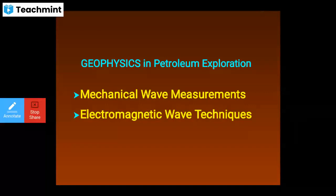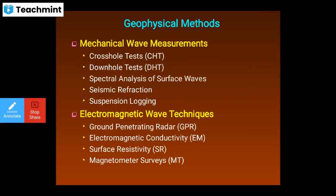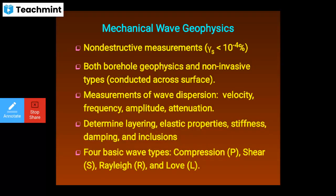The geophysical methods include mechanical wave measurements: crosshole tests (CHTs), downhole tests (DHTs), spectral analysis of surface waves, seismic refraction, and suspension logging. Electromagnetic wave techniques include ground penetrating radar (GPR), GPS, electromagnetic conductivity, surface resistivity (SR), and magnetometer surveys. These are the basic geophysics methods.